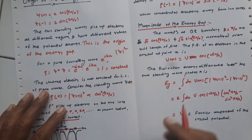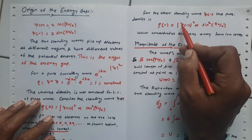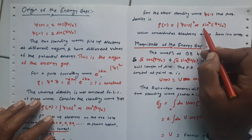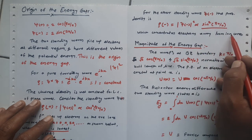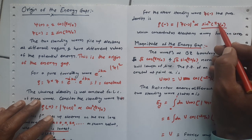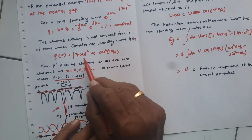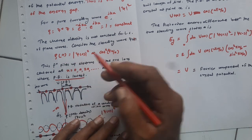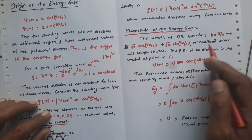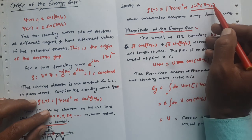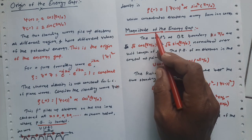For the other standing wave ψ-, the probability density is given by ρ- equals |ψ-|², which is proportional to sin²(πx/a). This concentrates the electron away from the ion core, because when x = 0, this density becomes zero. In the earlier case, ρ+ was maximum when cos is maximum (argument goes to zero giving one), whereas sin becomes zero when the argument is zero.